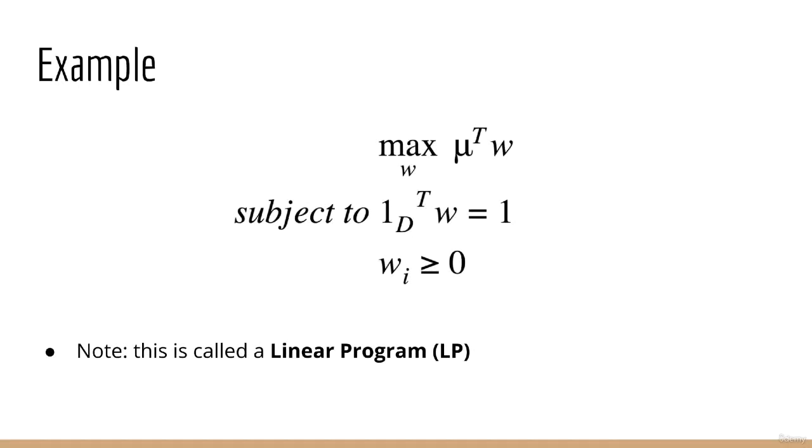So here's an example of a constrained optimization problem with more constraints on the weights. This time, we still want to maximize mu transpose w with respect to mu. This is subject to the constraint that the one vector dotted with w equals one, and that each w sub i is greater than or equal to zero. And by the way, we have a special name for this particular kind of optimization problem. We call them linear programs, or LPs for short.